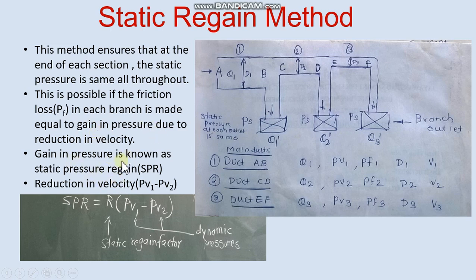Now gain in pressure is SPR, static pressure regain. Static pressure regain has formula R multiplied by PV1 minus PV2, which is the reduction in dynamic velocity. Let us see numerical.